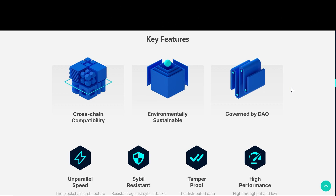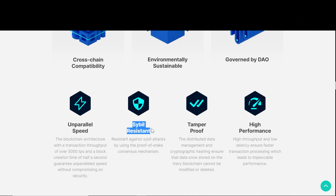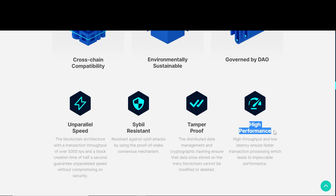Moving on to their key features: they offer cross-chain compatibility, they're environmentally sustainable, and they're governed by a decentralized autonomous organization. They have unparalleled speed — the blockchain architecture with a transaction throughput of over 5,000 TPS and a block creation time of half a second guarantees unparalleled speed without compromising on security. They're Sybil-resistant against Sybil attacks by using the proof-of-stake consensus mechanism. They are tamper-proof — distributed data management and cryptographic hashing ensure that data once stored on the Inary blockchain cannot be modified or deleted. And their high throughput and low latency ensure faster transaction processing, which leads to impeccable performance.